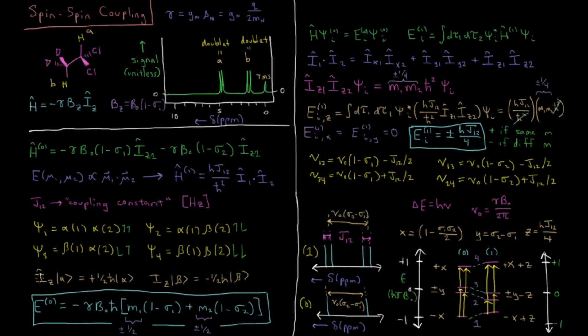And we know how the IZ operator acts on alpha and beta, how the Z component of the nuclear spin angular momentum operator acts on them. It's plus one half h-bar is the eigenvalue for alpha, and minus one half h-bar is the eigenvalue for beta. So you get a positive value for the spin up result, and a negative value for spin down, for the angular momentum in the Z direction.